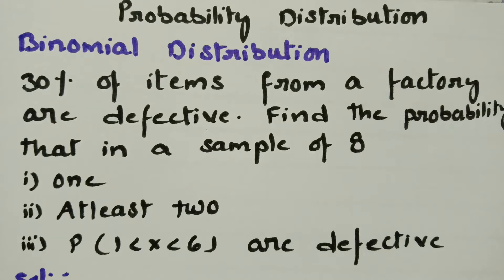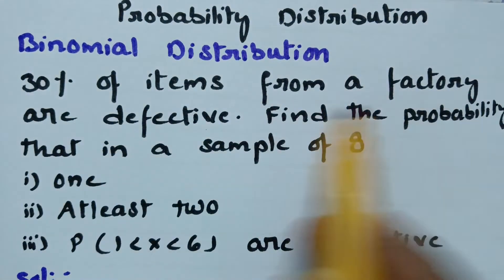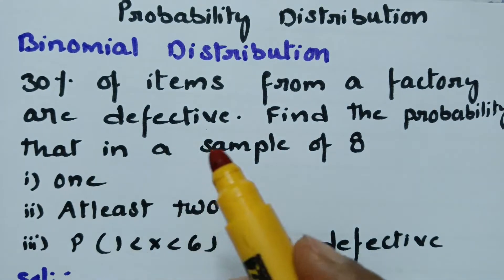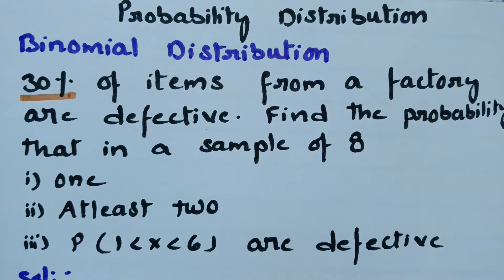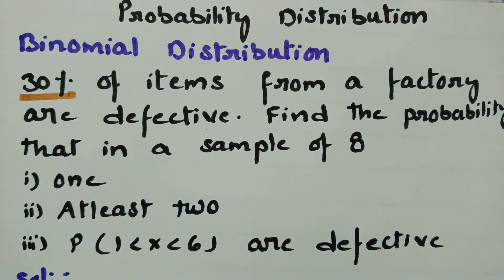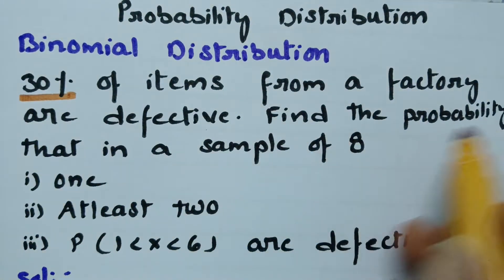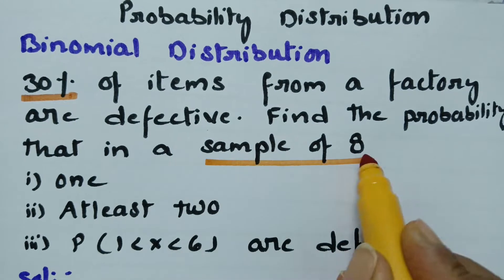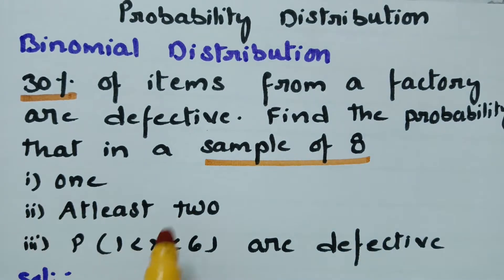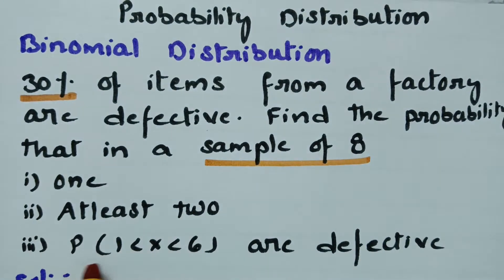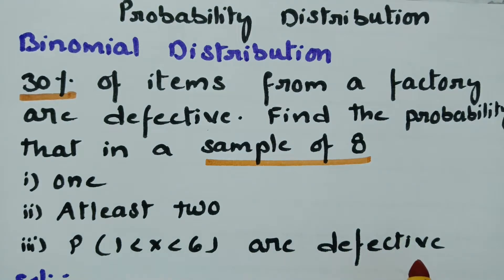Today's video is on binomial distribution. We are going to solve a problem: 30% of items from a factory are defective. Find the probability that in a sample of 8, exactly 1, at least 2, and 1 less than x less than 6 are defective.